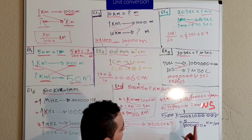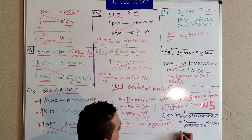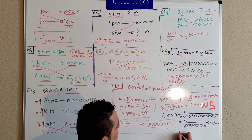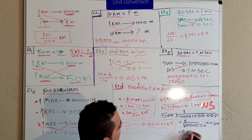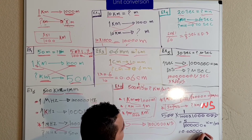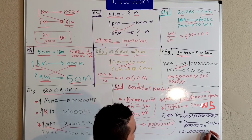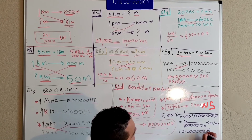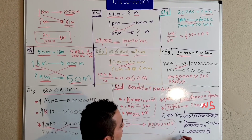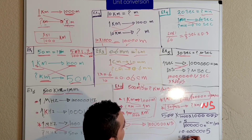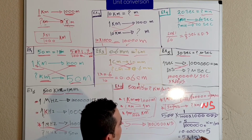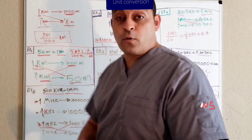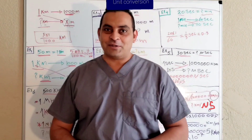We can write this number two different ways: as a decimal — zero point zero zero zero zero zero zero five — or in scientific notation as 5 times ten to the power of negative seven kilometers per microsecond. Thank you for watching and see you in the next video.